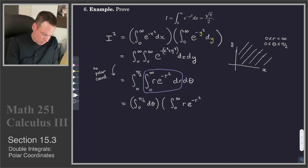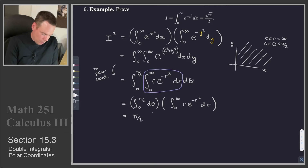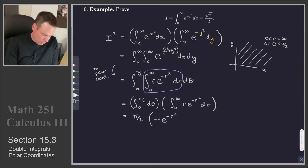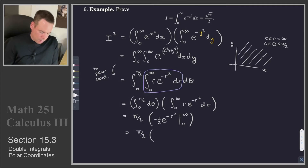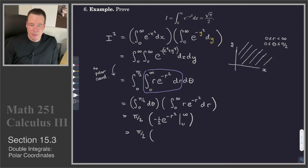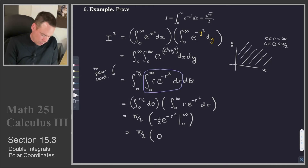The integral in terms of theta just becomes pi over 2. For the integral in terms of r, the antiderivative of r e to the negative r squared is negative one-half e to the negative r squared, evaluated from 0 to infinity. We should properly take the limit as t goes to infinity, but we've dealt with these subtleties before. Popping infinity in gives 0, and popping 0 in gives negative of negative one-half, so plus one-half.